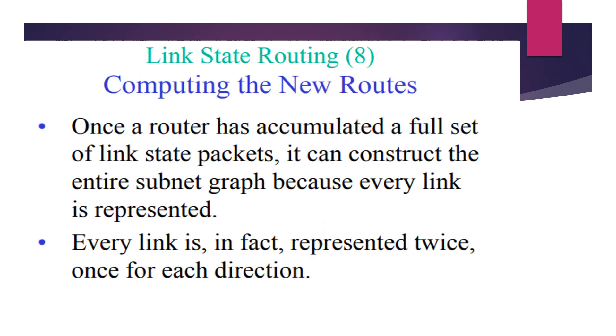Once a router has accumulated a full set of link state packets, it can construct the entire subnet graph because every link is represented. In fact, every link is represented twice, once for each direction—that is, send and accumulation.